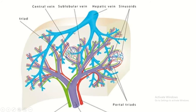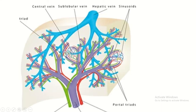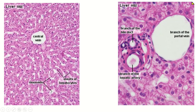This is the sub-lobular vein. You can see the location of the sub-lobular vein — the central vein drains into the sub-lobular vein. The sub-lobular veins unite to form the hepatic vein. So in histology, this is the central vein and these are the hepatic laminae.